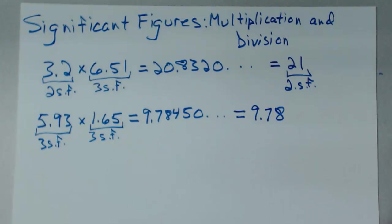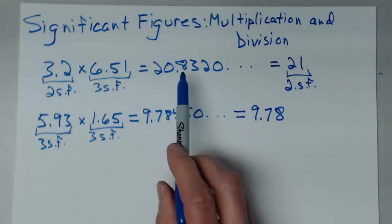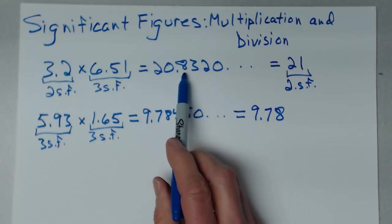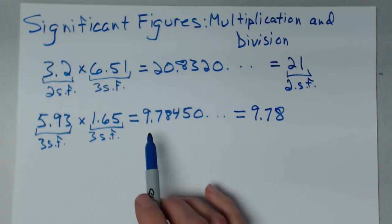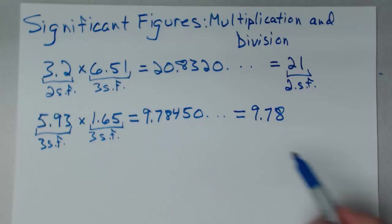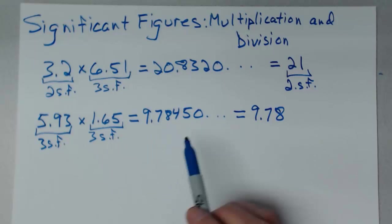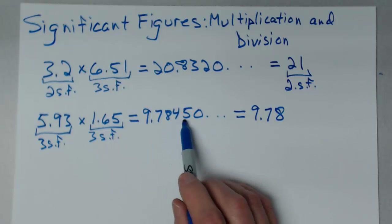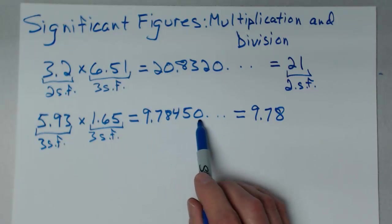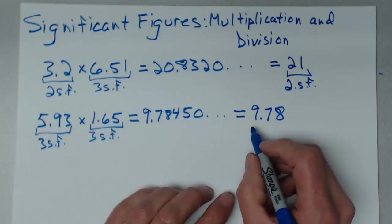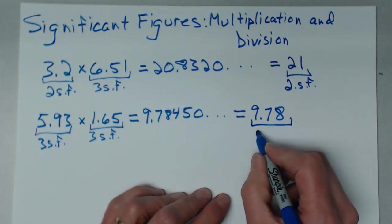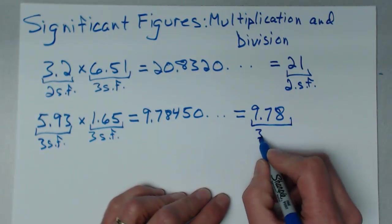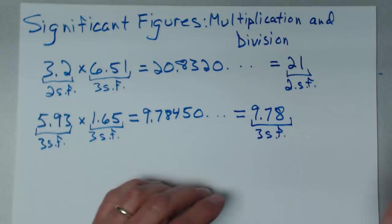The rest of those digits I might use for rounding — like I used the 8 to round to 21 in the previous example — but that's all I can keep. There's nothing to use for rounding here, so 9.78 is the result with three significant figures.